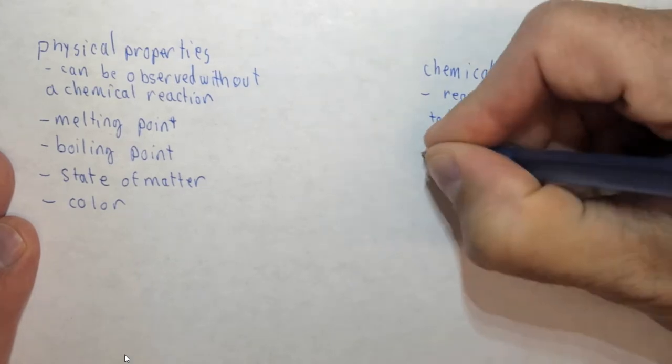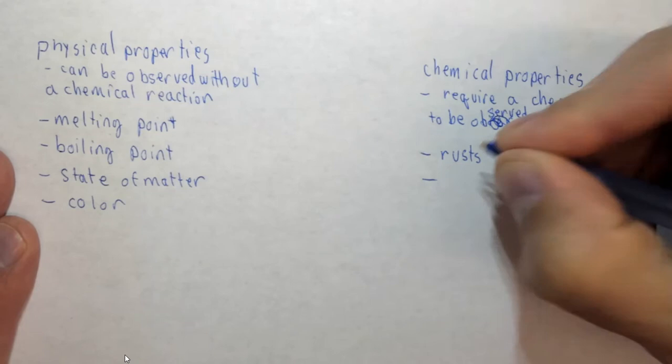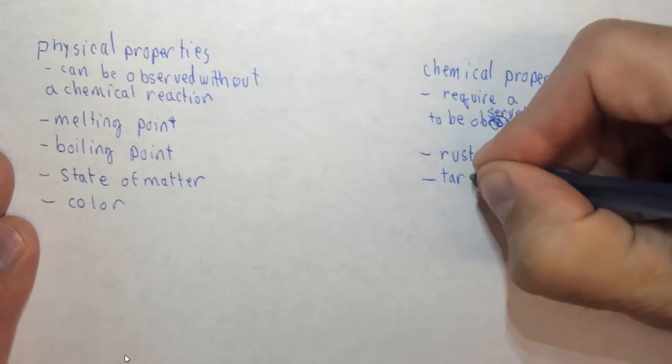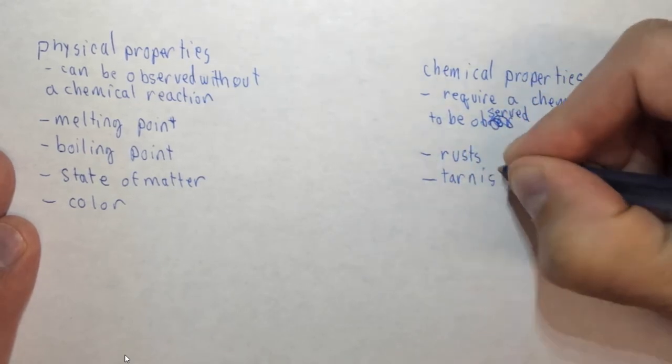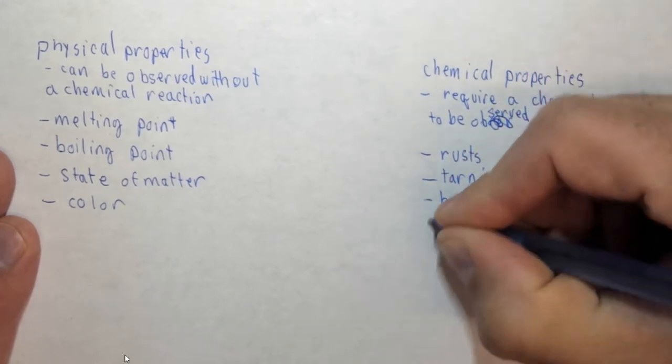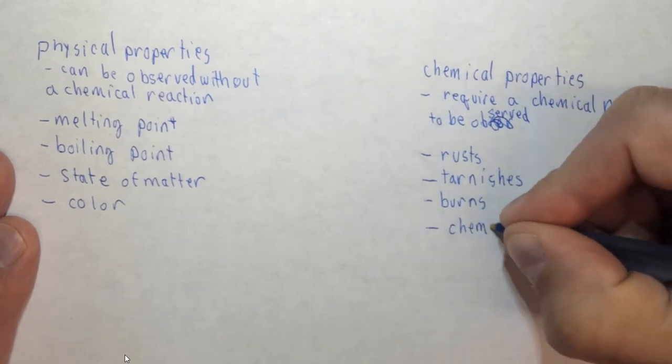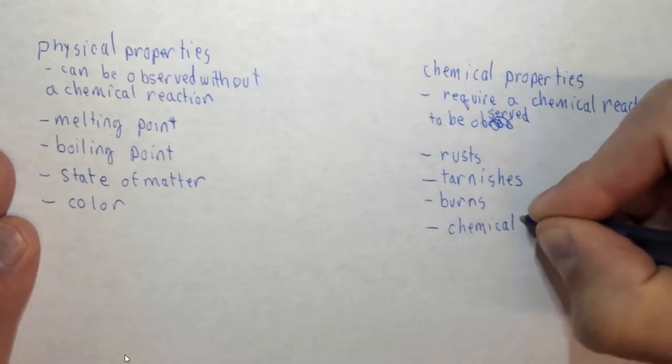And some examples include something rusts, something tarnishes which is very similar to rusts, something burns, or pretty much anything that can be denoted as a chemical reaction.